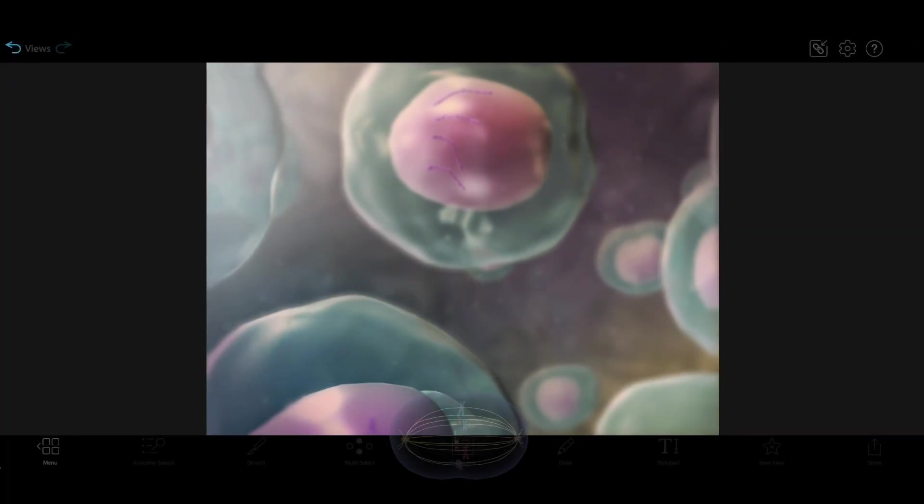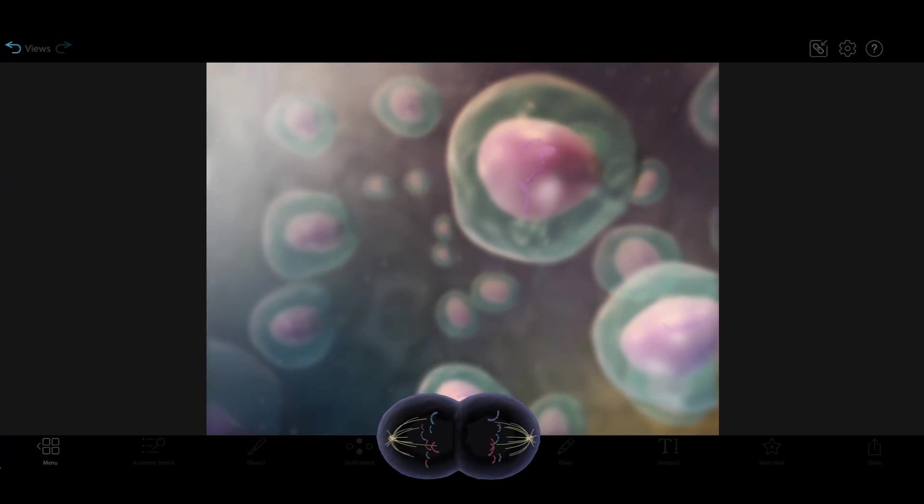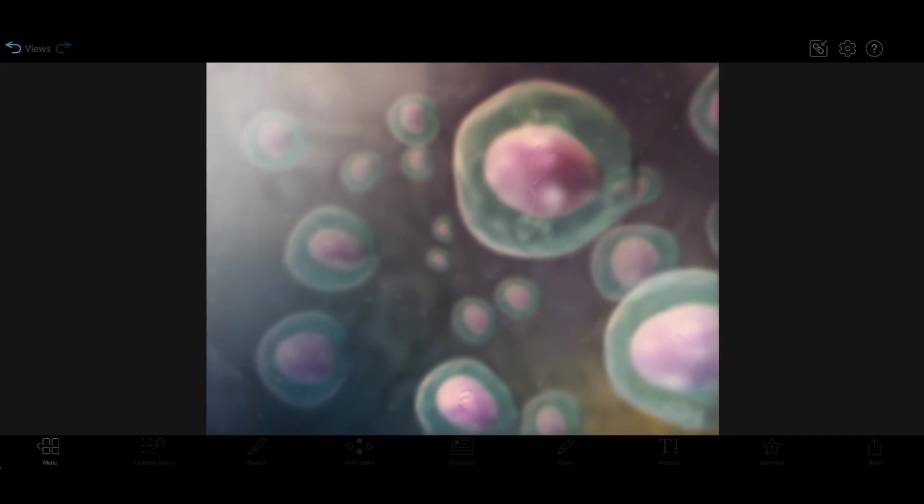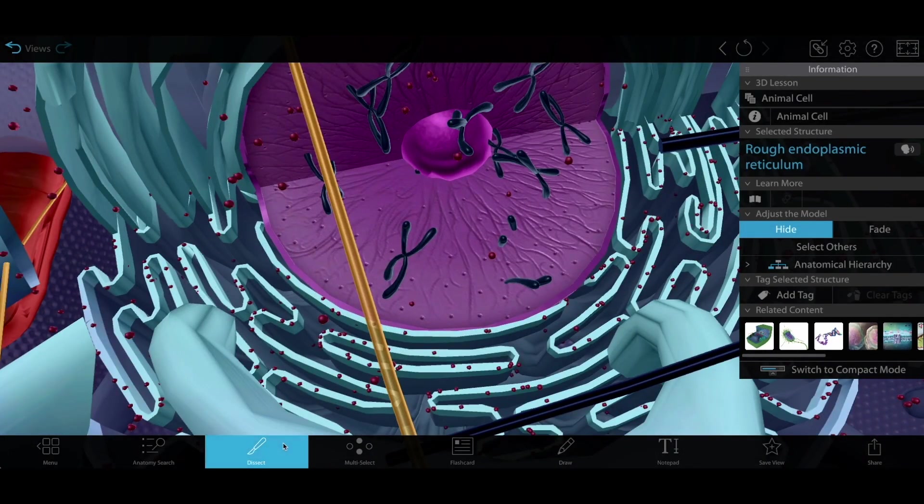Let's start by looking at mitosis. Mitosis is how somatic cells make more of themselves. Somatic cells are the non-reproductive cells you'll find in the bodies of animals or the tissues of plants.